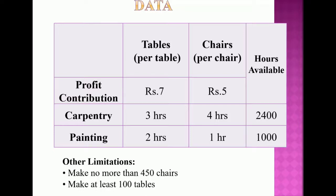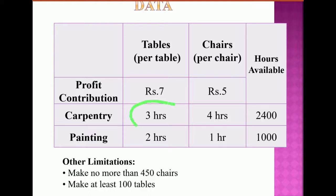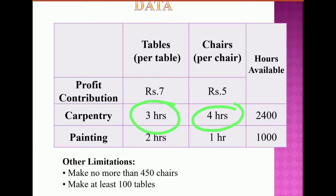The profit contribution is rupees 7 per table and rupees 5 per chair. Looking at carpentry work, it takes 3 hours to complete the carpentry for one table and 4 hours for one chair. The key constraint is that the carpenter is available for only 2,400 hours.